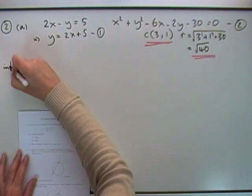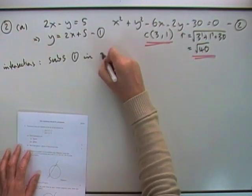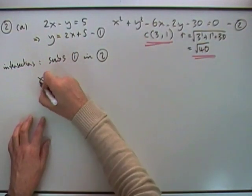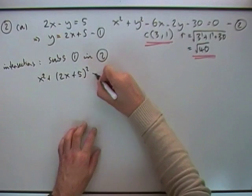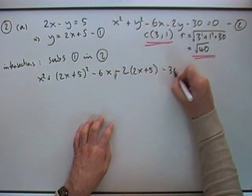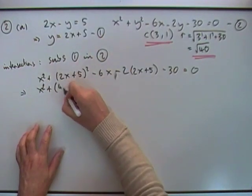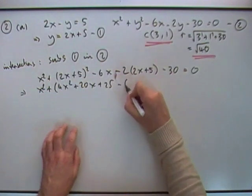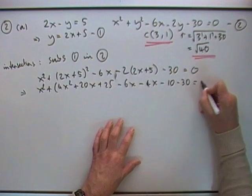So, intersections. Substitute 1 in 2. And there, off you go. So, wherever you see y, you write 2x plus 5. So I've got x squared plus y 2x plus 5 squared minus 6x minus 2 times y 2x plus 5 minus the 30 equals 0. Right, cut these brackets out. x squared plus another square bracket. So that's 4x squared twice the product, 10x doubled, 20x. Square the last, 25. Copy that down. Minus 4x minus 2 5s or 10 minus 30 equals 0.